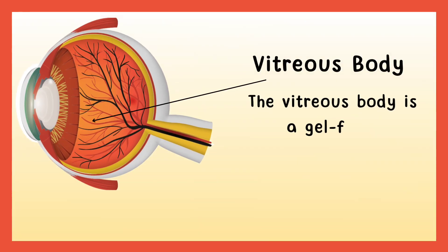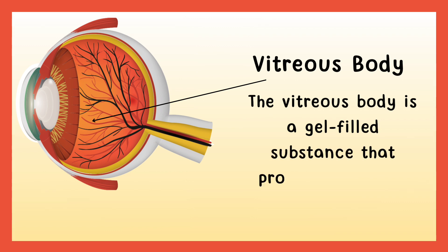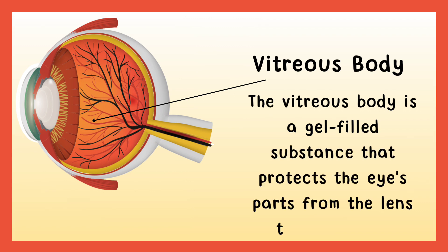Vitreous body. The vitreous body is a gel-filled substance that protects the eye's parts from the lens to the retina.